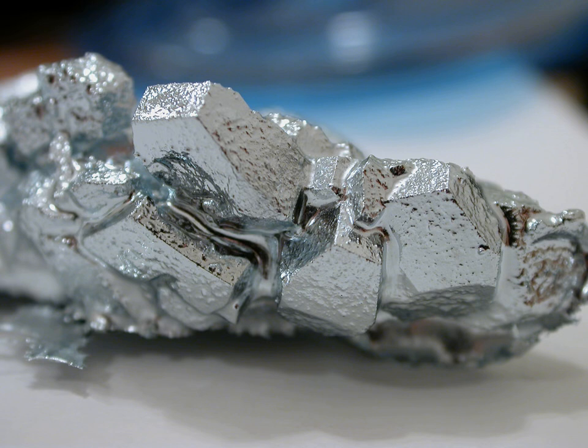Gallium also forms binary compounds with phosphorus, arsenic, and antimony: gallium phosphide (GaP), gallium arsenide (GaAs), and gallium antimonide (GaSb). These compounds have the same structure as ZnS, and have important semiconducting properties.